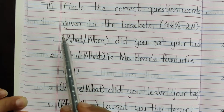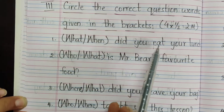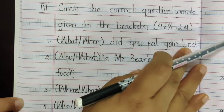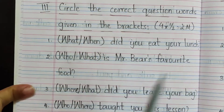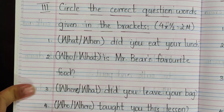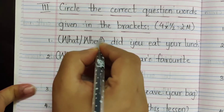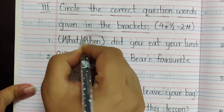The first one: 'What or when did you eat your lunch?' What will be the correct word? 'What did you eat your lunch?' — No. 'When did you eat your lunch?' — So, circle 'when'.